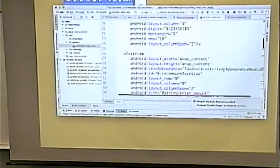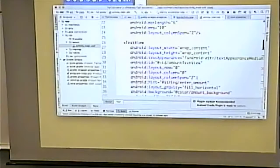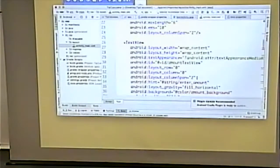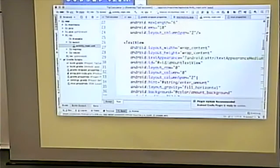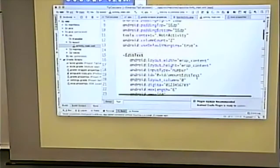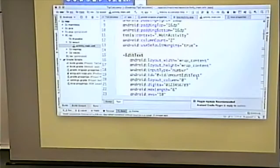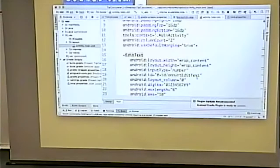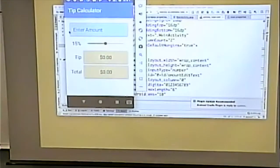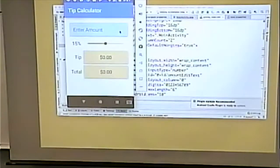So both the edit text and the text view, we specified a column span of two. What that does is, we've set the default, we've set the number of columns to two. And then we've said this guy takes up about two columns. So that's why this goes across two columns. Gotcha.